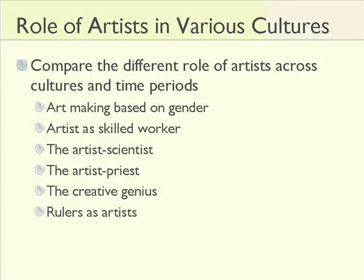The role of the artist is different in different cultures and it's been different at different times in history. In some cultures, there's a gender specificity to art — men do one kind of art while women do another. There have been times in history when the artist was primarily a holy person or a scientist. During the Renaissance, the artist became a creative genius. And there have been times when the making of art was identified with the ruler, the chief, or some important person in the social structure.